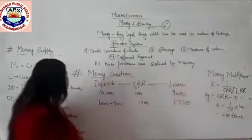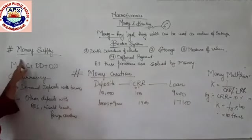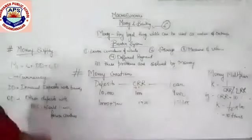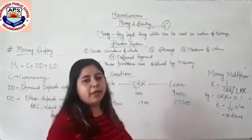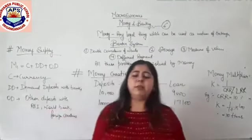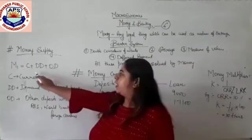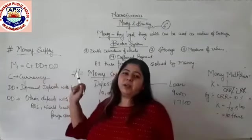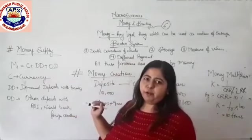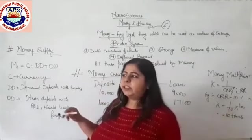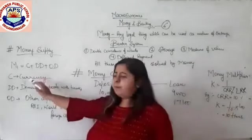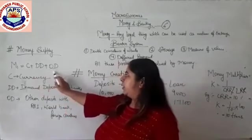The last topic for today is money supply — how much money is in circulation in our country among the public at a point of time. That is known as money supply. To measure money supply, there are 4 formulas: M1, M2, M3, and M4. But in our syllabus, only M1 remains. M1 = C + DD + OD.